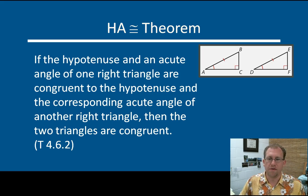And the hypotenuse angle theorem is the same thing as angle angle side or side angle angle. If the hypotenuse and an acute angle of one right triangle are congruent to the hypotenuse and the corresponding acute angle of another right triangle, then the two triangles are congruent. So you have this angle for free, get any of the other angles and the hypotenuse, and you have congruent triangles.